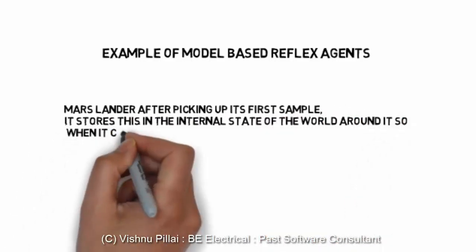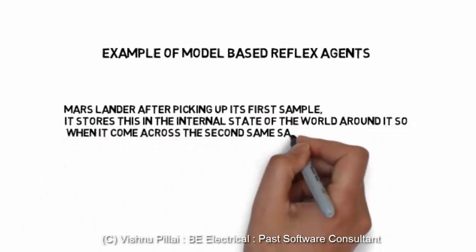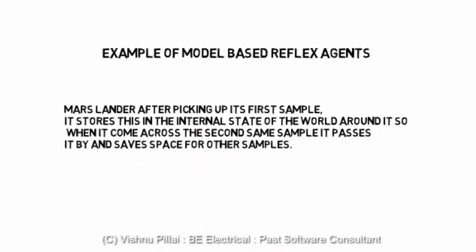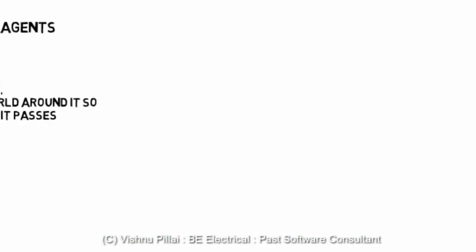For example, consider a Mars lander. After picking up its first sample, it will store this in its internal state. So if it comes across a second sample of the same kind, it can ignore that sample and save the space for other samples. This is how the agent, in the case of a Mars lander, will take into consideration the percept history by storing it in the state of the model.